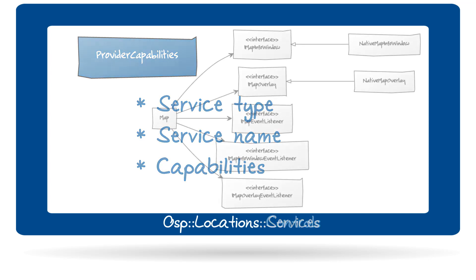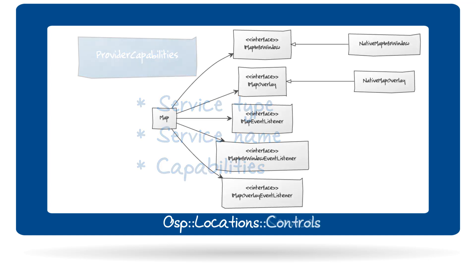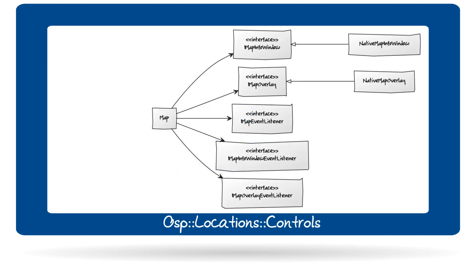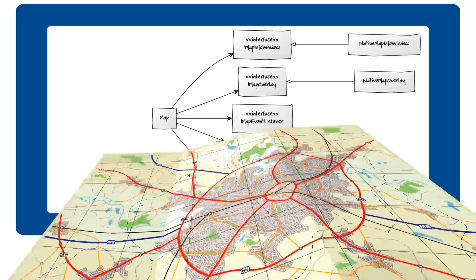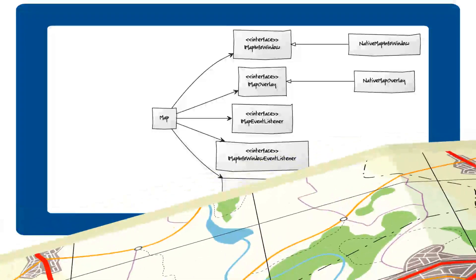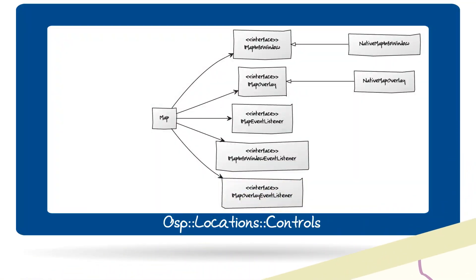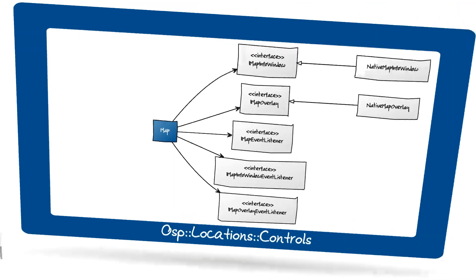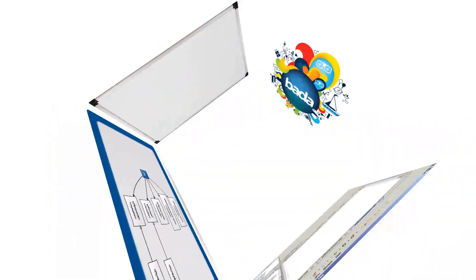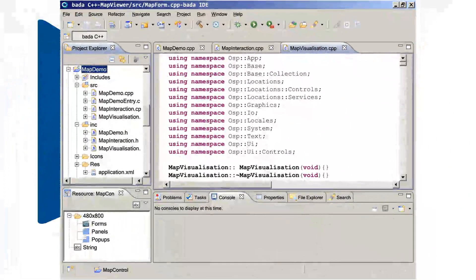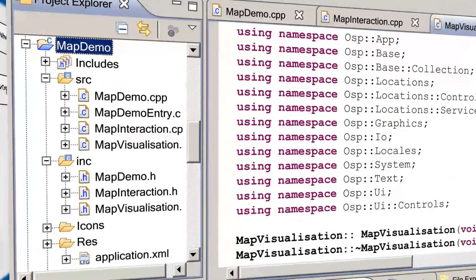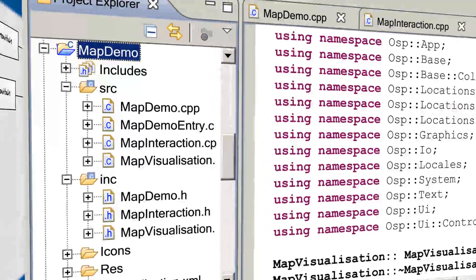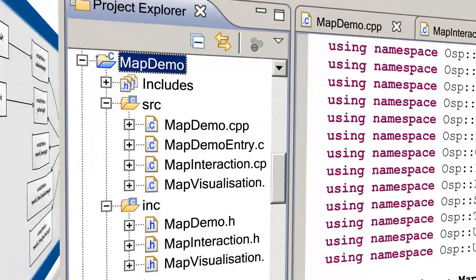The last namespace presented here is OSP Locations Controls, which allows users to pan, zoom, and interact with maps in a natural way. The core of this namespace is the Map class, which we will use in our code example. In this example we will show how a map can be displayed on screen with an overlay revealing the user's current position. Our application is composed of four C++ source files.